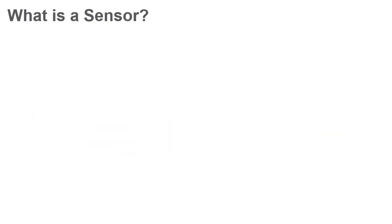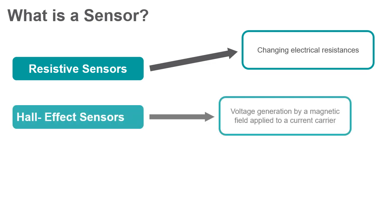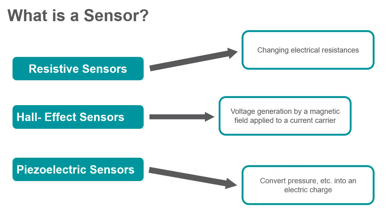Many different physical properties can be utilized to generate the measurable output signal. Resistive sensors measure the changing electrical resistances in different conditions. Hall effect sensors measure the voltage generation by a magnetic field applied to a current carrier. Piezoelectric sensors convert pressure, acceleration, force, or strain into an electric charge.